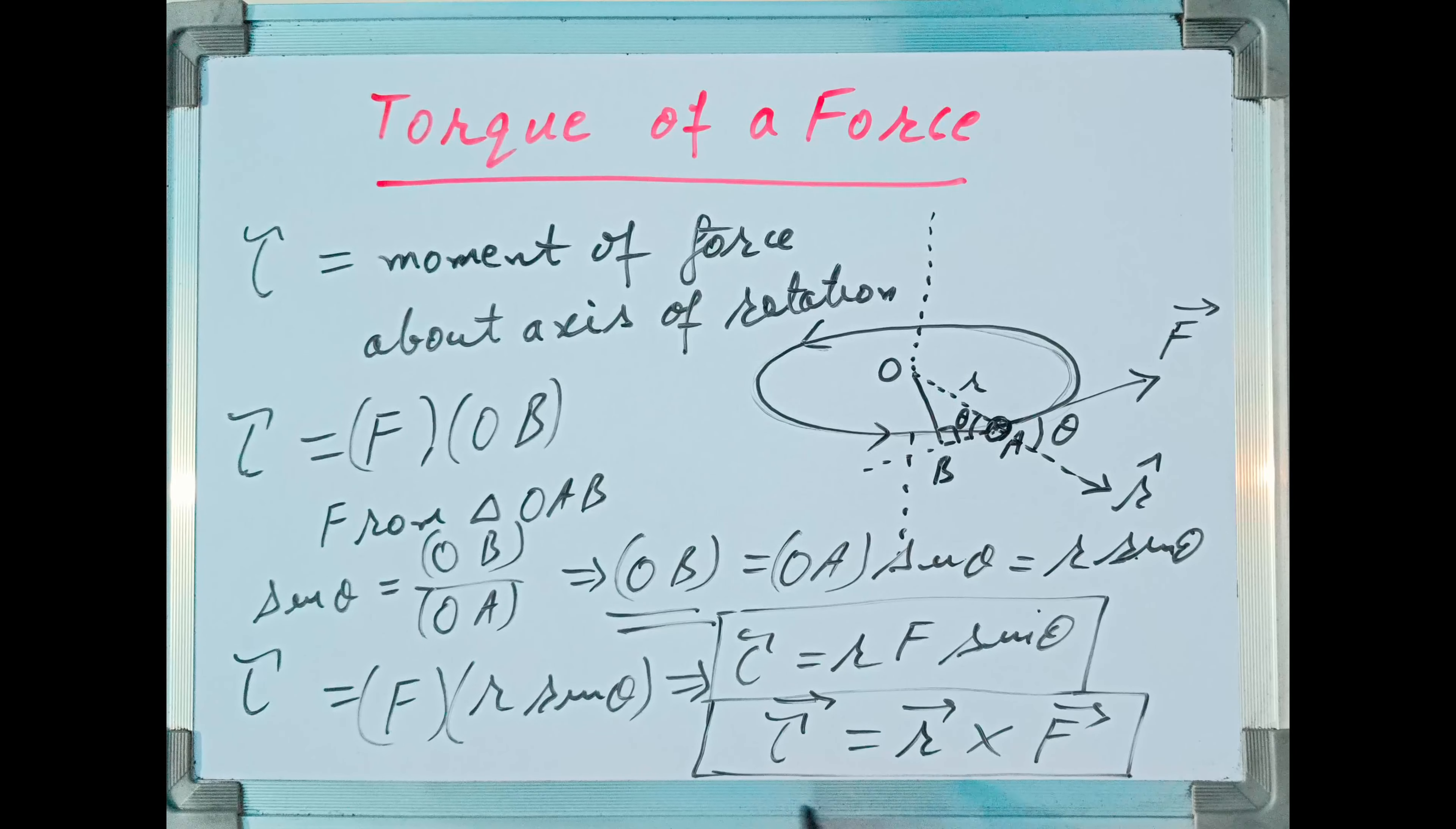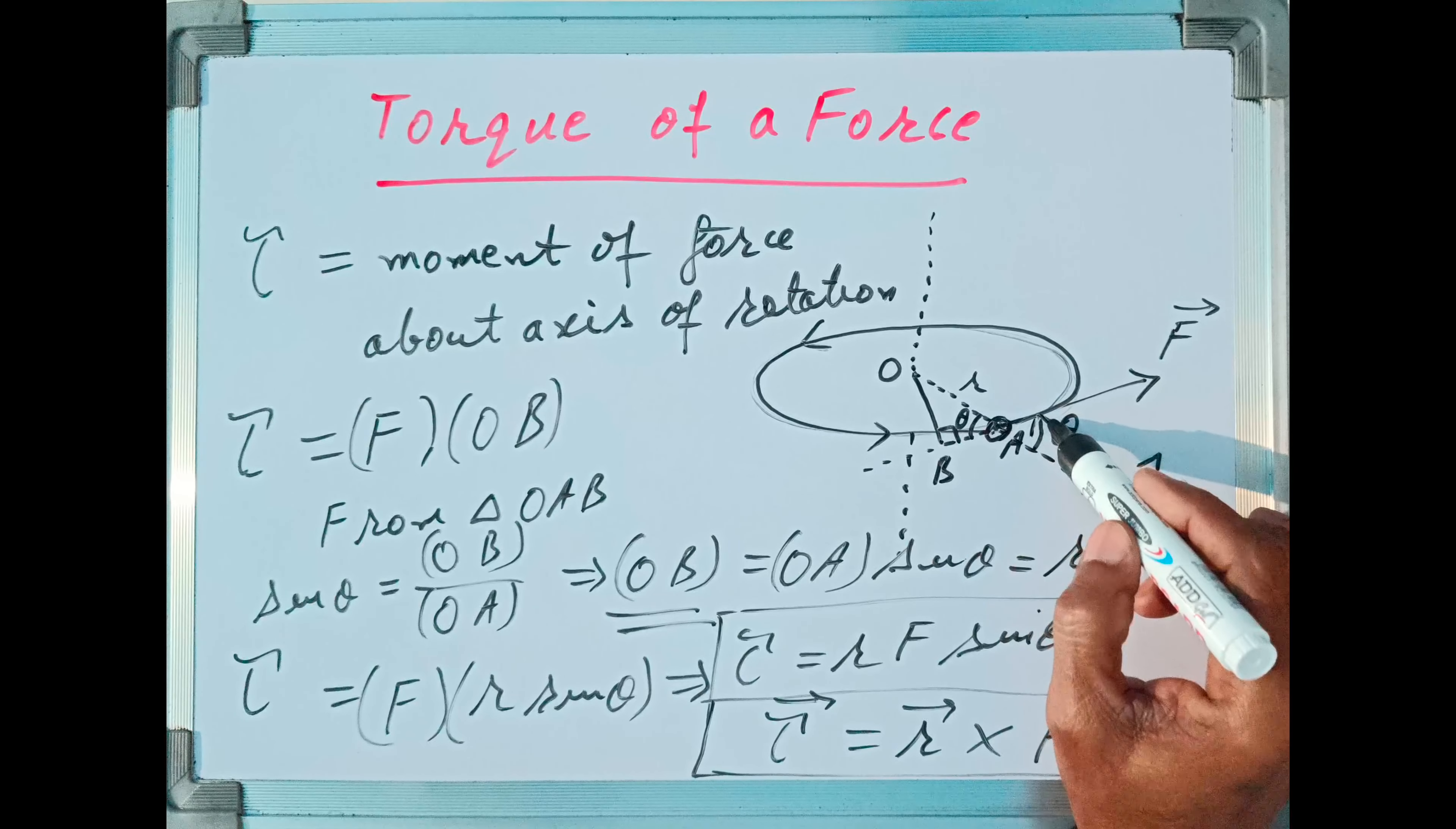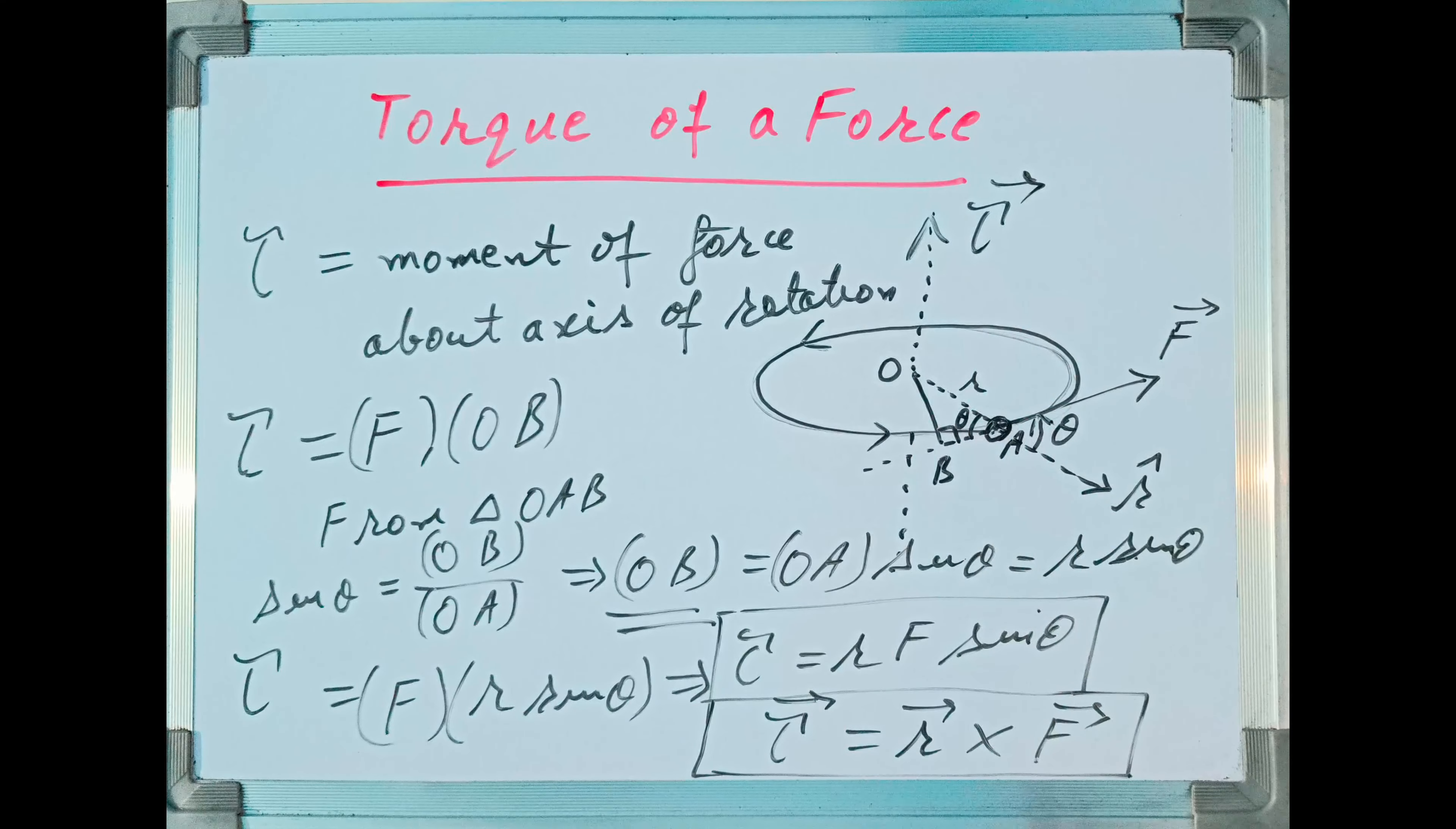Now this right-hand side is the magnitude of the cross product of R vector and F vector. So in vector form, I can write torque is equal to R vector cross F vector. So this is the complete expression for torque of a force F vector acting on a body. Now tau vector is a vector quantity.